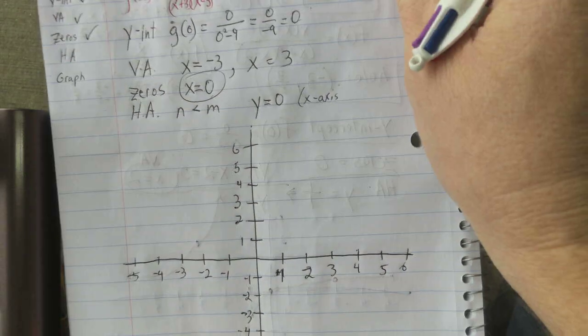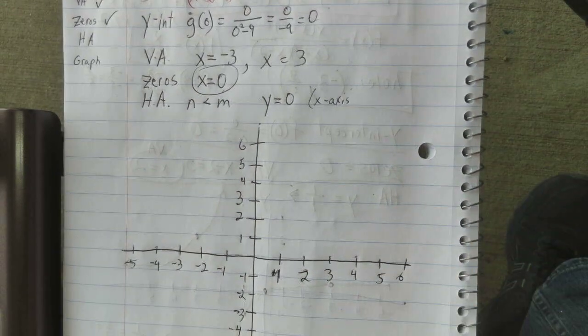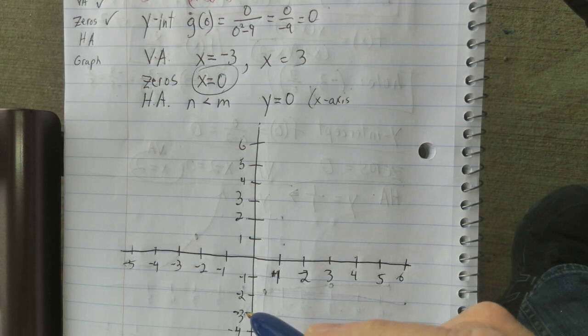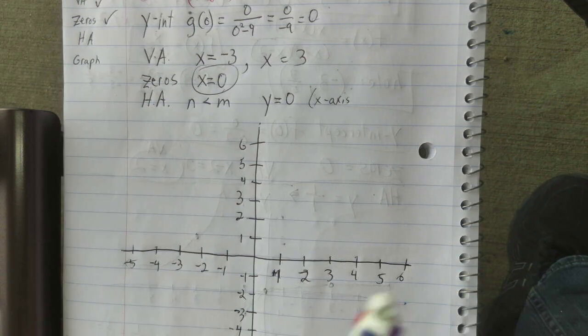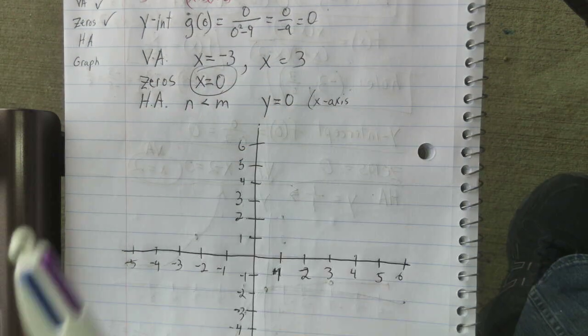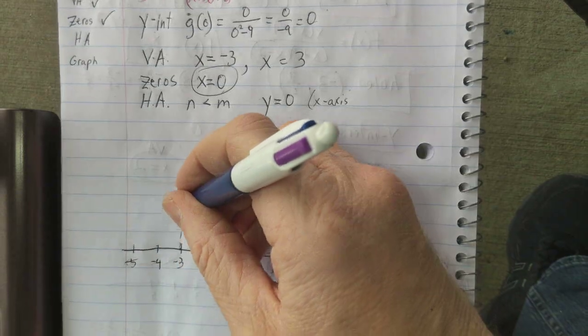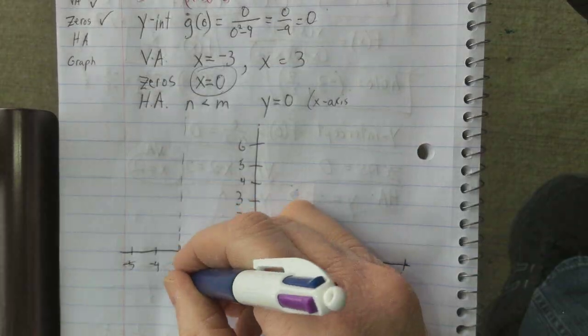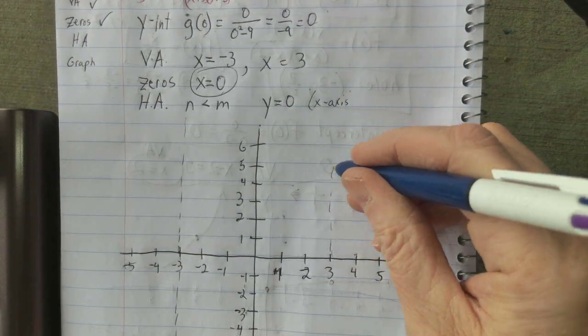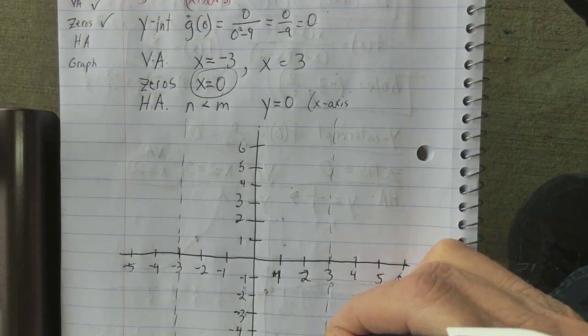So, let's plot the vertical asymptotes. x equals negative 3. There is a vertical asymptote. And x equals positive 3. There is a vertical asymptote.